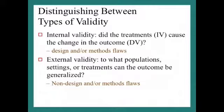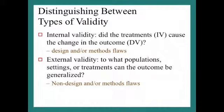The other validity issue is external validity — can you generalize the results of the final study findings back to the population? For example, if we did a study on 250 athletic training students, can we really take the results back to all athletic training students? Some of these issues are non-design or method flaws, and if internal validity is compromised, it will also cause external validity issues.